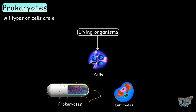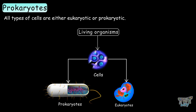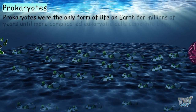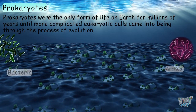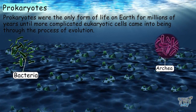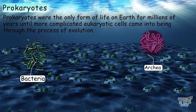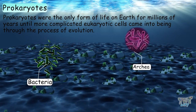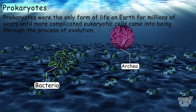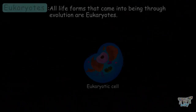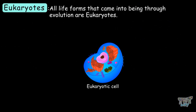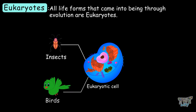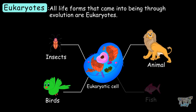All types of cells are either eukaryotic or prokaryotic. Prokaryotes were the only form of life on the earth for millions of years until more complicated eukaryotic cells came into being through the process of evolution. All life forms that came into being through evolution — like insects, birds, animals, and fish — are made up of eukaryotic cells.